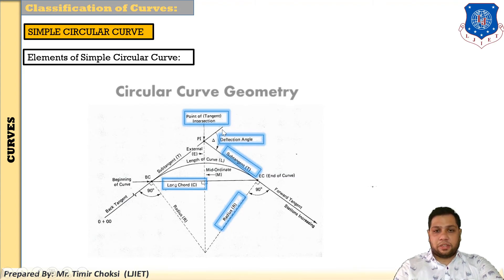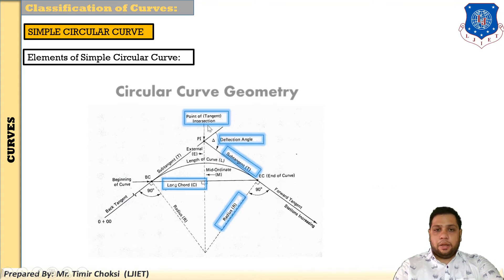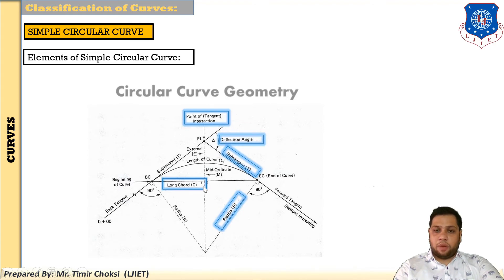The elements of the simple circular curve include: back tangent, forward tangent, beginning of curve (point of curvature), end of curve (point of tangency), point of intersection, deflection angle, subtangent, mid ordinate, length of curve, external distance, long chord, short chord, normal chord, radius, and deflection angle.